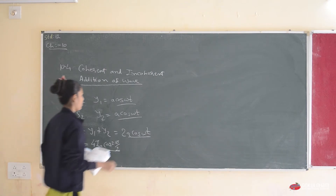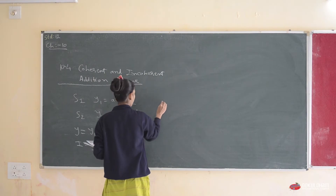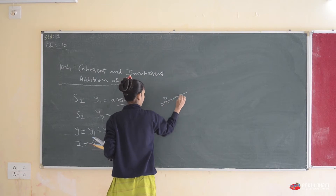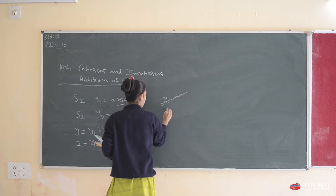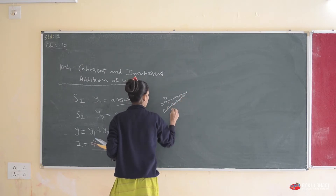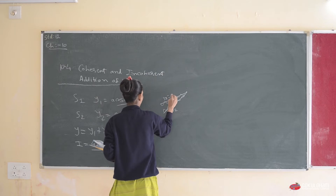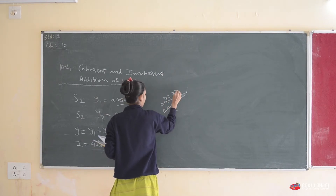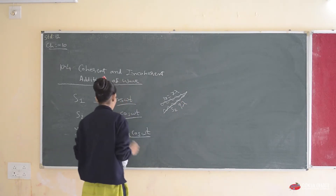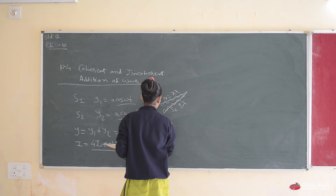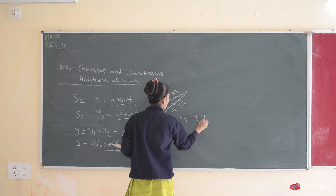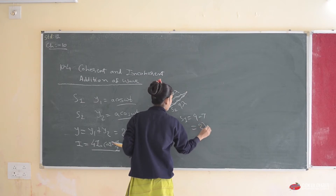We have a structure with two waves: one wave has a path length value of 7λ and the other, S2, has a displacement value of 9λ. So when we get the total displacement difference, S2 minus S1, that is equal to 9 minus 7, which gives us the answer 2λ. We get a positive result.